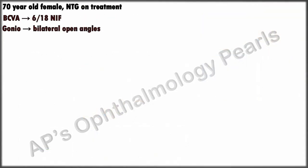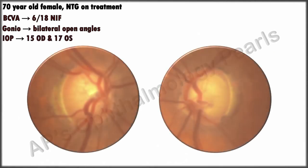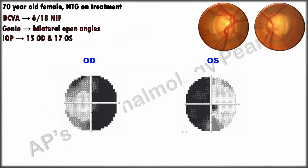Case 2: A 70-year-old female, a known case of NTG on treatment with IOP in the mid-teens. Even though the discs appear glaucomatous, the fields show a characteristic bitemporal hemianopia, mandating further investigation. An MRI revealed a pituitary macroadenoma, which was operated on with improvement in the fields. Apparently the NTG had been misdiagnosed earlier; however, rarely an NTG can coexist, so the patient should be followed up regularly.